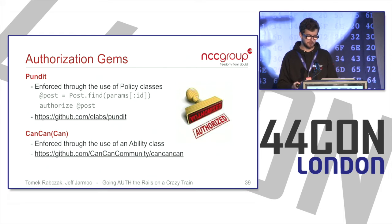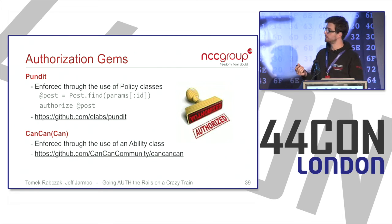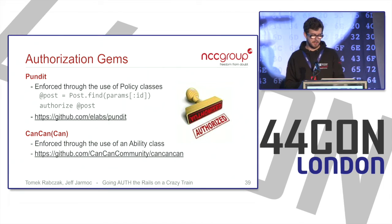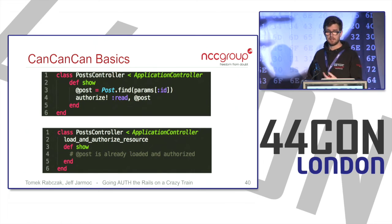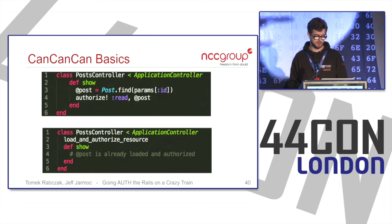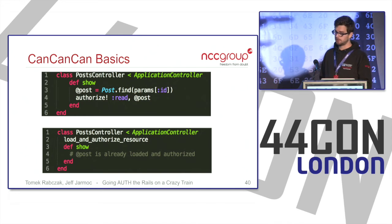For authorization gems, Pundit and CanCanCan — formerly CanCan — are the most popular. Pundit looks up a resource and calls authorize on it, with rules defined in policy classes. CanCanCan works similarly through ability classes where you specify the ability: 'authorize! :read, @post'. Both come with helper methods. The underlying code makes use of before actions and callbacks.